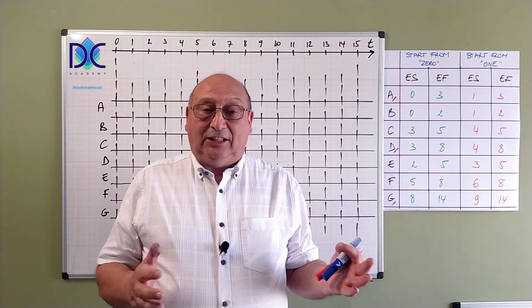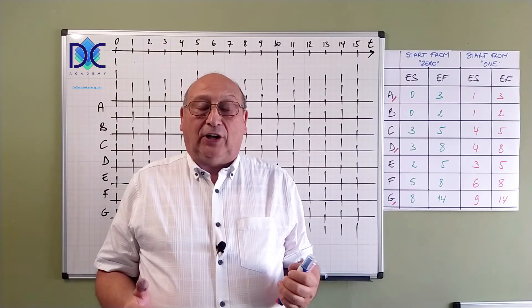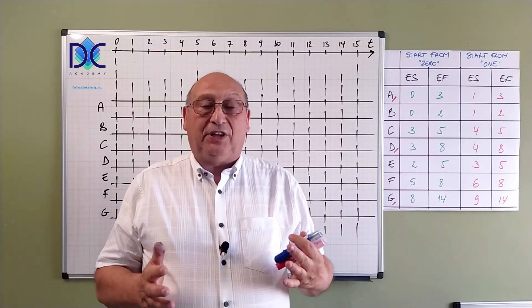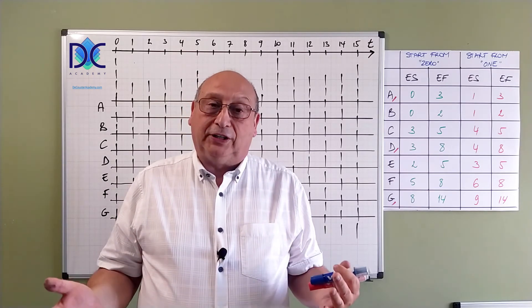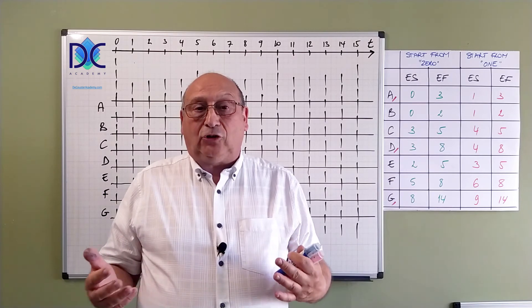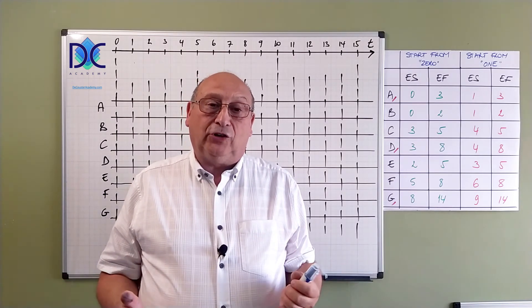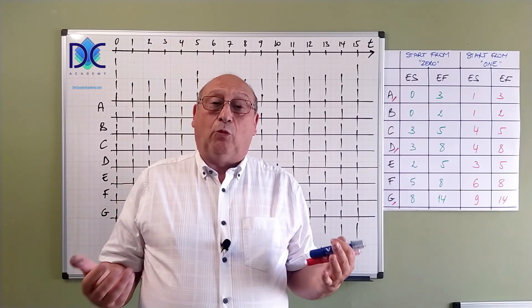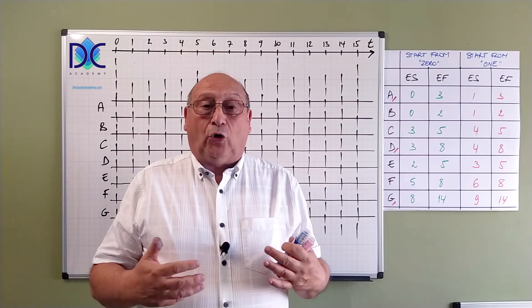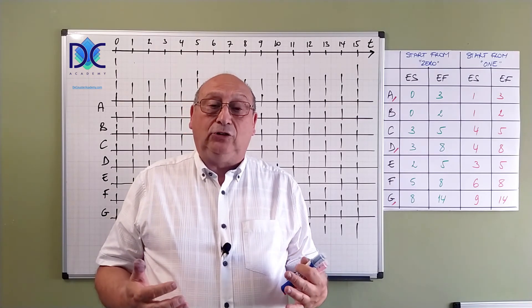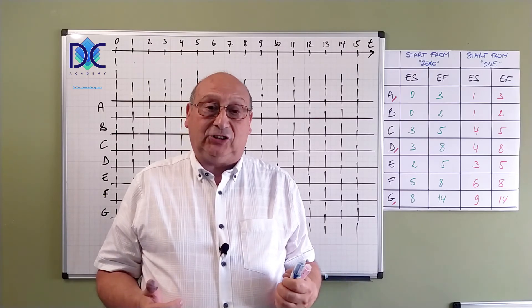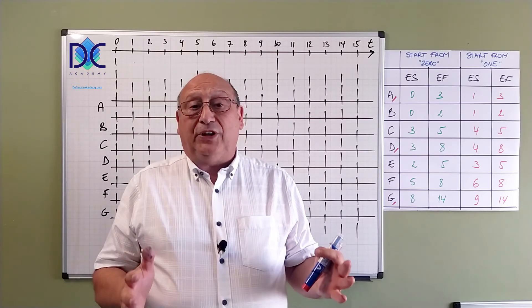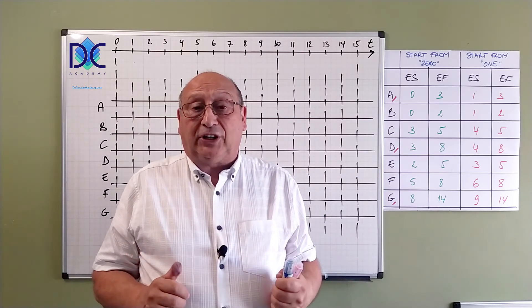We did that in two ways. First, we started the calculation from zero. We are using the coordinates, so we start from zero and calculate the duration of the activities and the duration of the final project. The next step was to do the same, but we start from one. We are not counting the coordinates anymore, we are counting the ordinal numbers, counting the days. Both methods are equivalent, although there are some differences when we look at the results of the calculations.